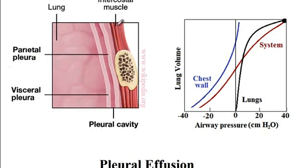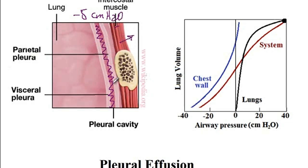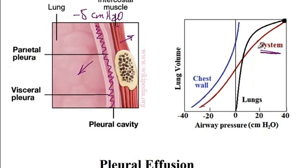The intercostal muscles are connected to the lungs via the pleural cavity. The pleural cavity is made of a parietal pleura and visceral pleura, and the area inside has a vacuum of minus five centimeter water pressure. Once the chest wall expands, since there is a vacuum connecting it to the lungs, the lungs will expand as well. A diagram shows that the lungs and chest wall are connected via the pleural cavity, with the lungs tending to recoil inward while the chest wall tends to spring outward.